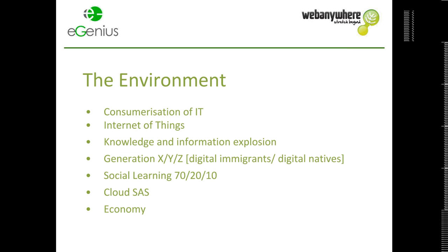The internet of things is an interesting change happening — all sorts of different devices connecting to the internet. It will no longer be just smartphones, computers, and tablets, but kettles, fridges, and toothbrushes. It's estimated that by 2020 there will be 30 billion wirelessly connected devices of all sorts. Just to put that in perspective, the population of the earth is 7-point-something billion.